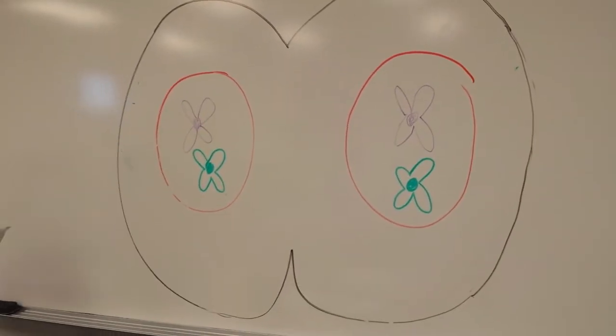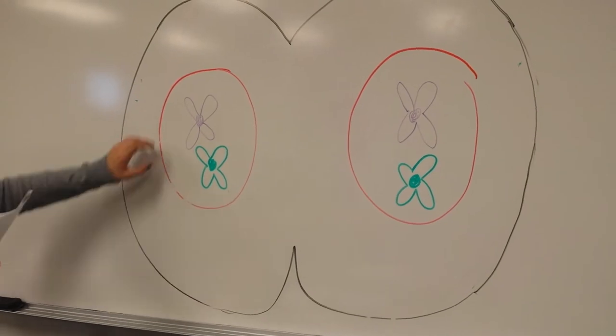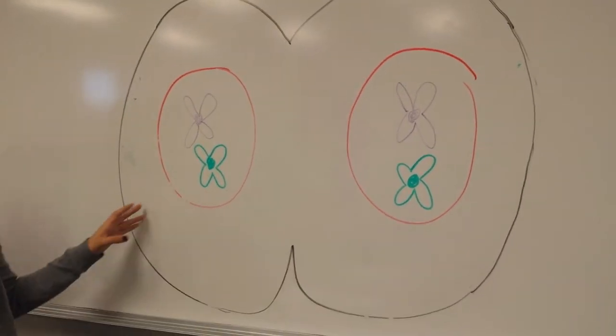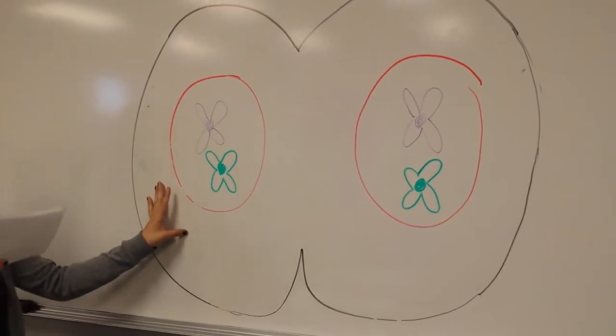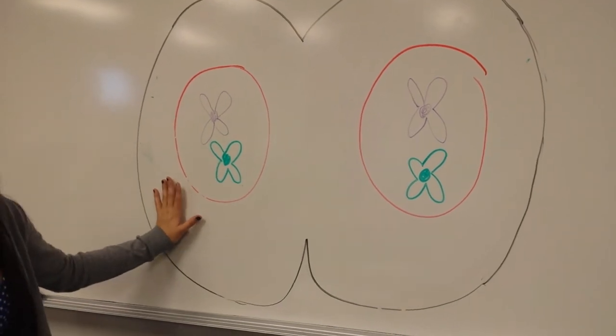The chromosomes with two chromatids decondense and a nuclear envelope forms around them, which means each nucleus is now haploid, which is half the DNA of a chromosome.